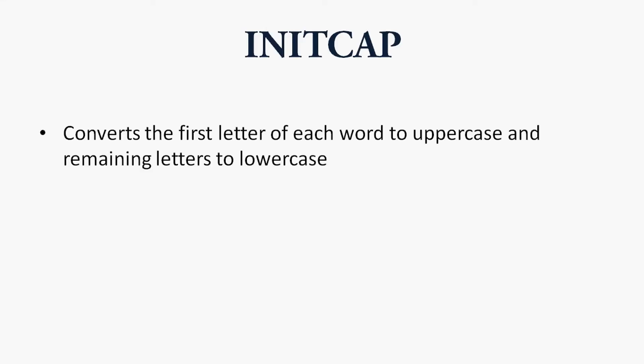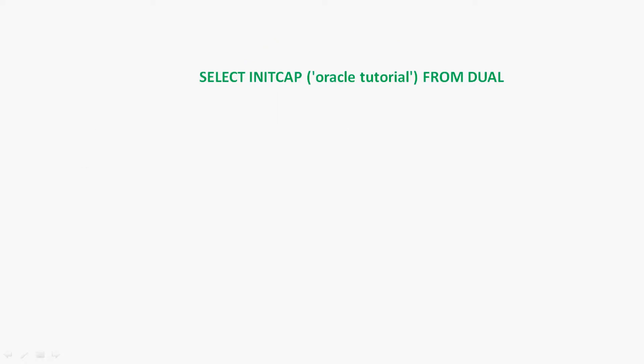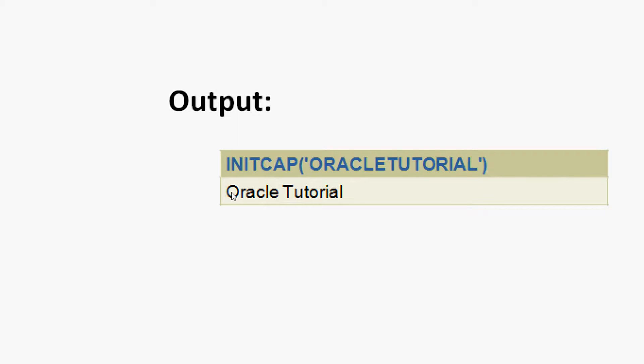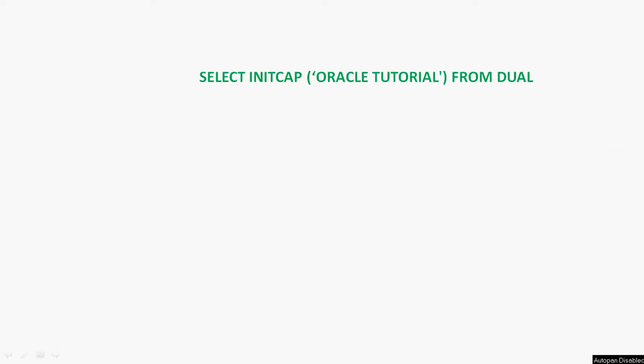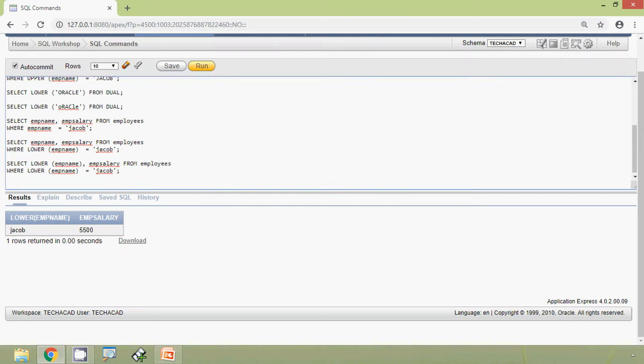Finally we are coming to INITCAP. The INITCAP function converts the first letter of each word to uppercase and the remaining letters to lowercase. Here we can see an example: SELECT INITCAP('oracle tutorial') FROM dual. In the output we can see INITCAP converts the first letter of each word — 'oracle' and 'tutorial' — to uppercase and remaining letters to lowercase. We also see an example: SELECT INITCAP('ORACLE TUTORIAL') FROM dual where the words are given in uppercase, and we can see the result.